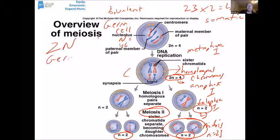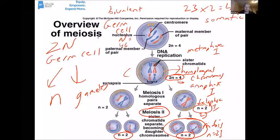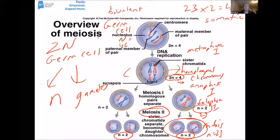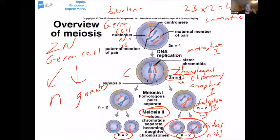One of the jobs of meiosis is to take diploid germ cells and create haploid gametes. That's important because a haploid sperm and a haploid egg are going to get together to make a diploid zygote. By splitting the chromosome number in half, meiosis helps maintain the number of chromosomes in an individual from generation to generation. Without that, the number of chromosomes would double every generation.